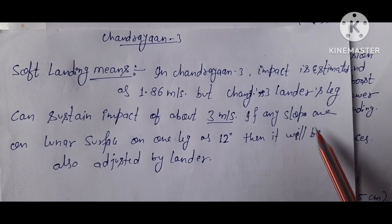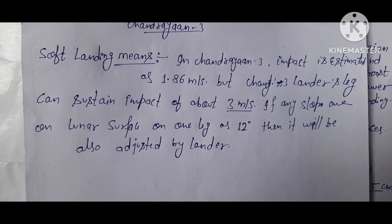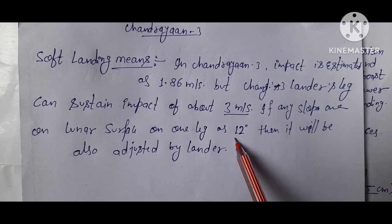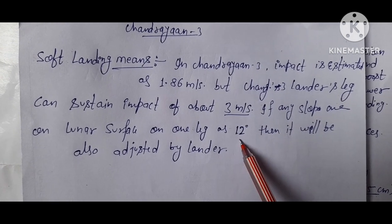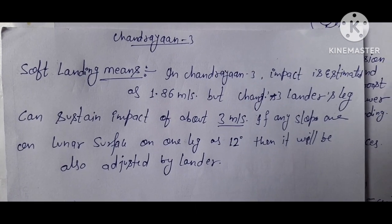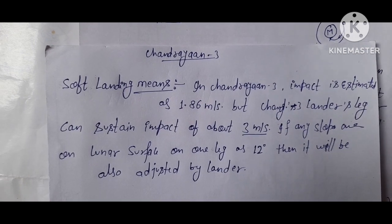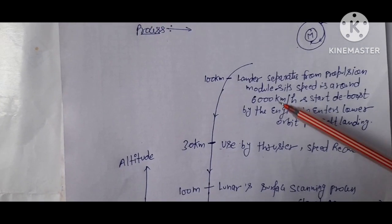If a slope of about 12 degrees occurs on one of the legs of Chandrayaan-3, the legs can adjust themselves. This is the landing criteria for the Chandrayaan-3 lander.